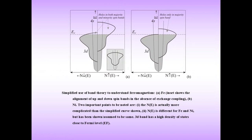The nd spin-up plus spin-down equals 7.05, and the net spin-up minus spin-down equals 2.2 µB. The simplified band theory helps understand ferromagnetism in Fe. In the absence of exchange coupling, spin-up and spin-down bands are equal; holes exist in both majority and minority spin bands, and their difference gives the net moment.